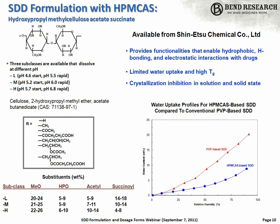With respect to stability, HPMCAS has a particular advantage in that maintaining a fairly high glass transition temperature in the solid state is a key attribute for maintaining good solid state stability. HPMCAS, relative to some other polymers such as PVP or PVPVA, has fairly low water uptake. As a consequence, it maintains a fairly high glass transition temperature even at high humidity like 75% RH, which leads to oftentimes particularly good solid state stability for HPMCAS dispersions.